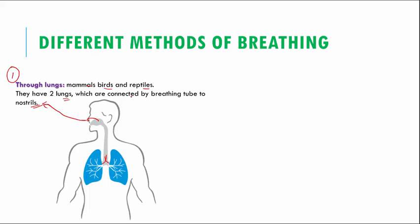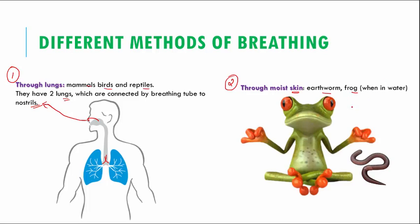The second method is through moist skin. There are some animals which use moist skin to breathe, like the earthworm and frog when it is in water. When the frog is on land, it generally breathes with the help of lungs. But when the frog is in water, it uses its skin to breathe. So we have the earthworm right here and we have the frog here.